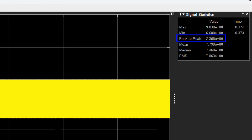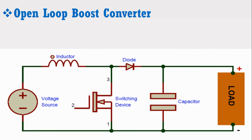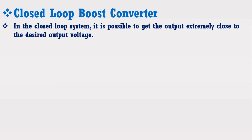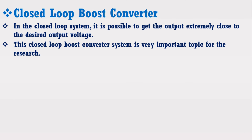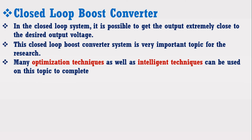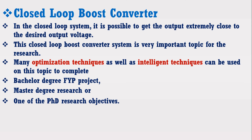You may wonder why our results are not accurate. The main reason is that we have designed the boost converter as open loop. In open loop mode, we need manual tuning of the duty cycle of the pulse generator, so we have to try it again and again to get accurate results. Another method to get accurate results is to use a closed loop boost converter. In the closed loop system, it is possible to get the output extremely close to the desired output voltage. This closed loop boost converter system is a very important topic for research, and many optimization and intelligent techniques can be applied for bachelor FYP projects, master degree research, or PhD research objectives. Therefore, I have decided to make many videos on this closed loop boost converter with various intelligent controllers to help you.